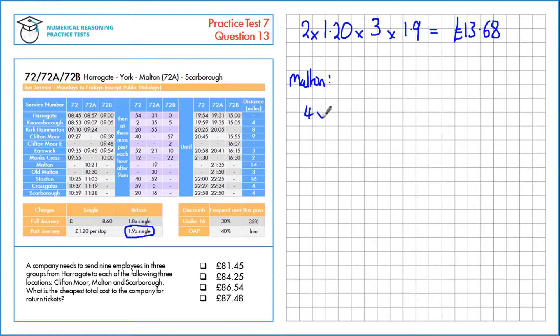That's four stops times £1.20 times three people, and we want the return again, so multiply by 1.9. That's a total cost of £27.36.